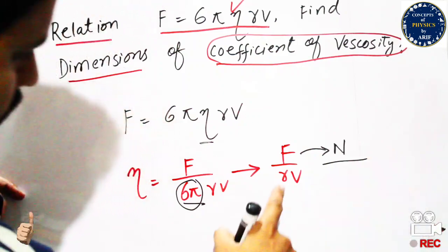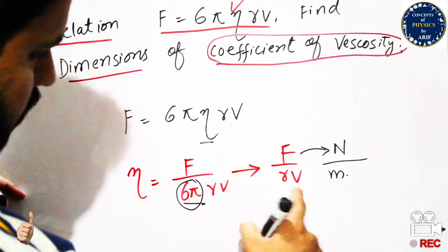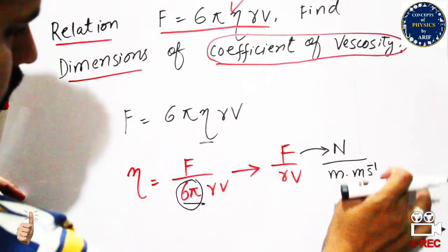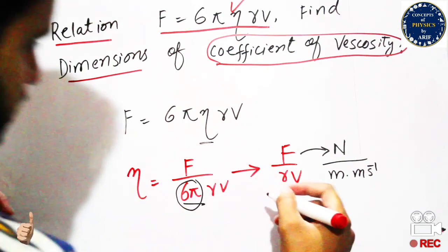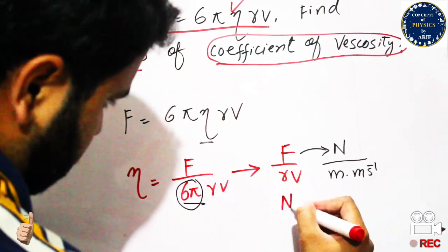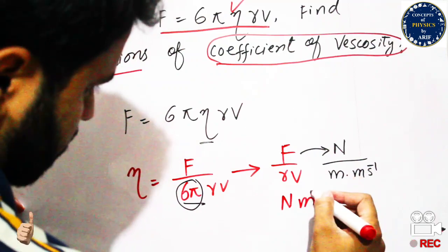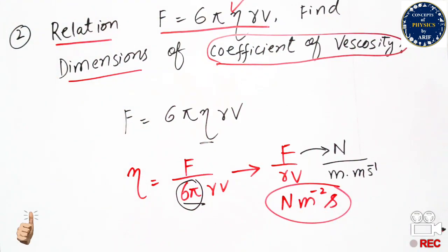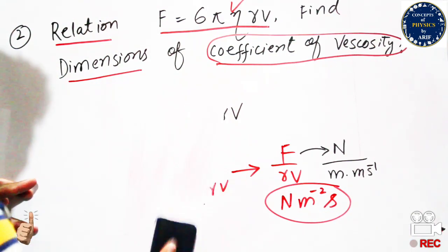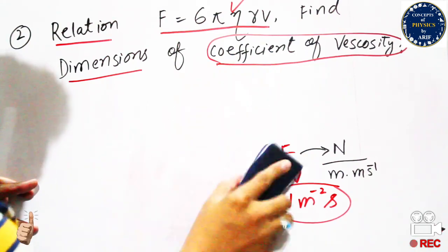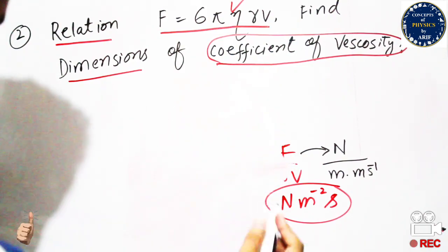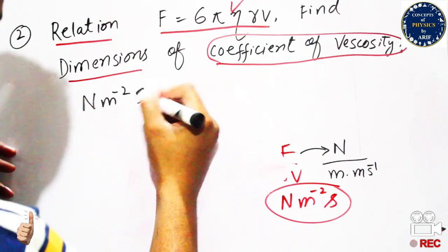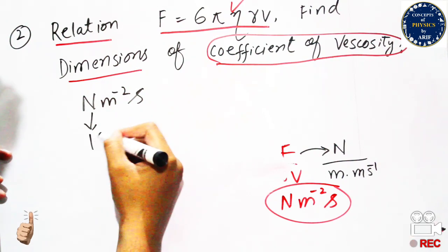The SI unit of force is Newton, the unit of radius is meter, and the unit of velocity is meter per second. Combining these, we get Newton per meter squared, or equivalently N·m⁻²·s. The units of the coefficient of viscosity are Newton per meter squared times second.